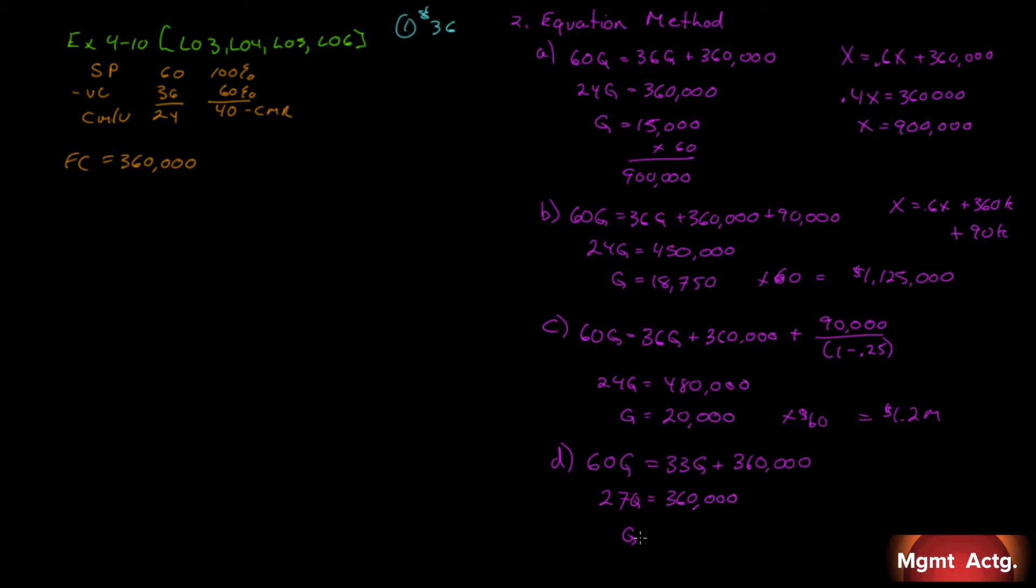So that will give us 27Q equal to $360,000. So Q will equal an odd number. You'll get a decimal point. Now, no matter what the decimal point is, always round up. Because if you round down, you'll be just maybe a few dollars below break-even. Always round up. Even if it's 10.003, you'd think, well, that's 10. Well, round up. Always round up to the nearest one. So we're going to round this up to $13,334 instead of $33,333. Which means we should have gone down to $33. But in this type of analysis, always round up.